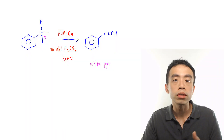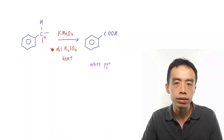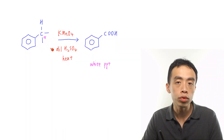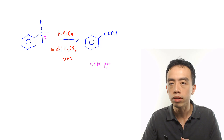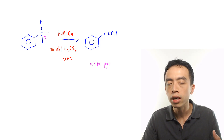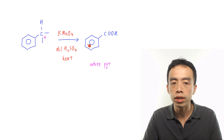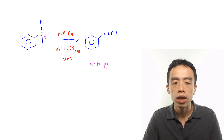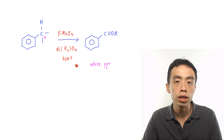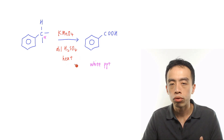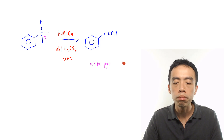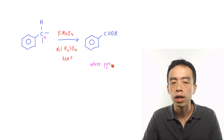Usually when we learn the oxidation of alkyl benzene, we use methyl benzene as an example. I have CH3 attached to benzene, and then I oxidize this using KMnO4 in dilute H2SO4, heat or heat under reflux. The product expected is benzoic acid.